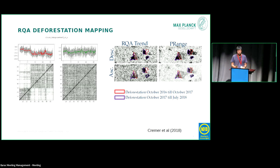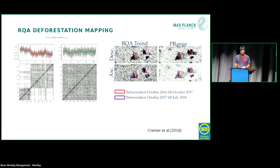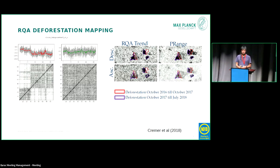We tested this on a local scale. Here's an example: on the left there's a deforestation event with an average time series of all five-by-five pixels and a recurrence plot below it. On the right there's a stable forest, which shows basically random points in the recurrence analysis. You can see there's a good distinction between the deforestation area and the surrounding forest.